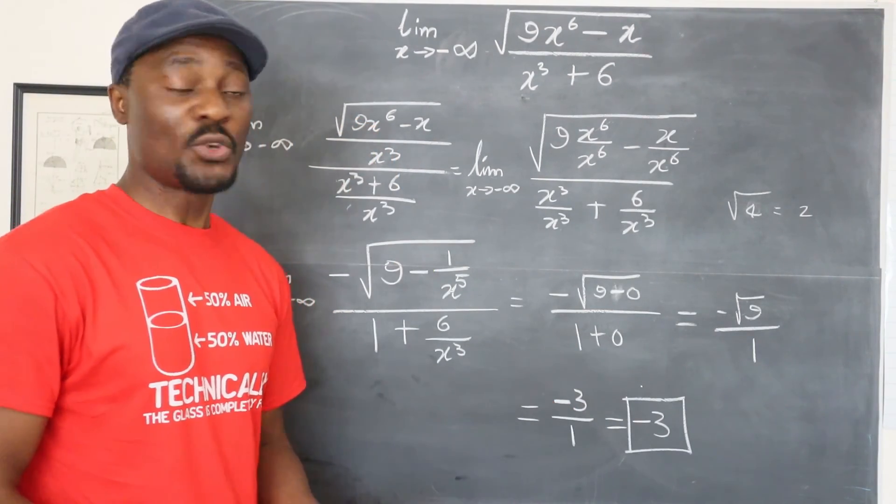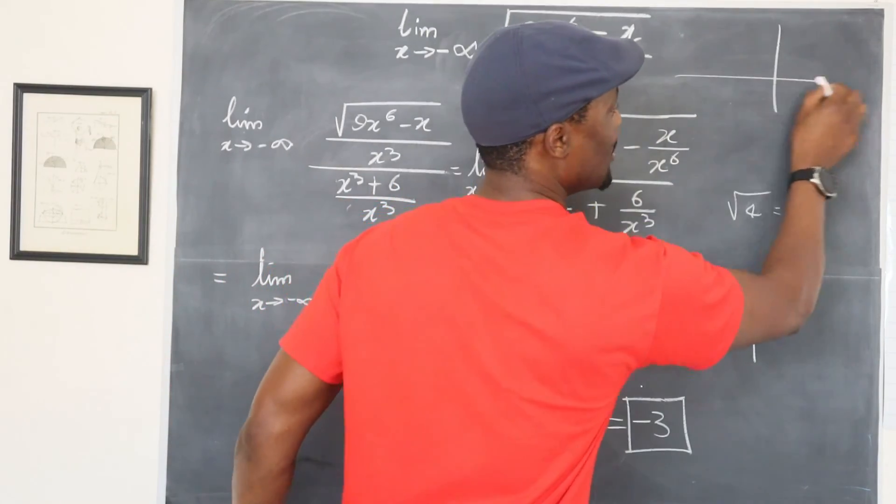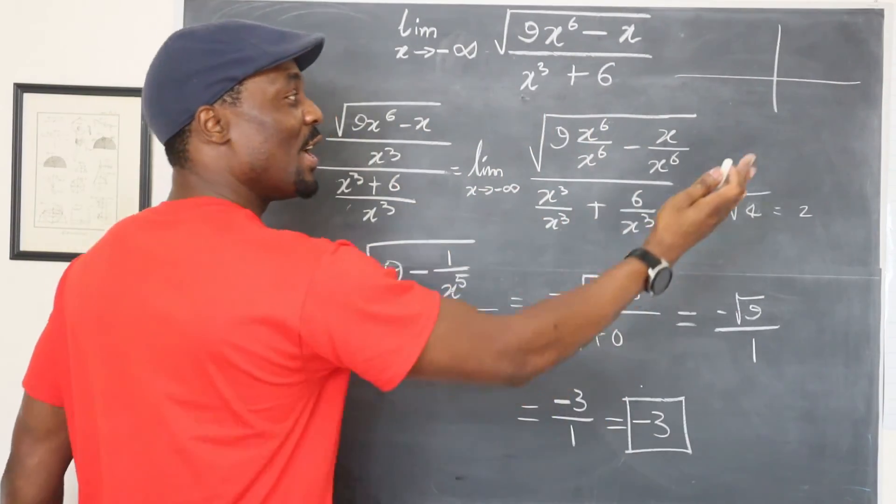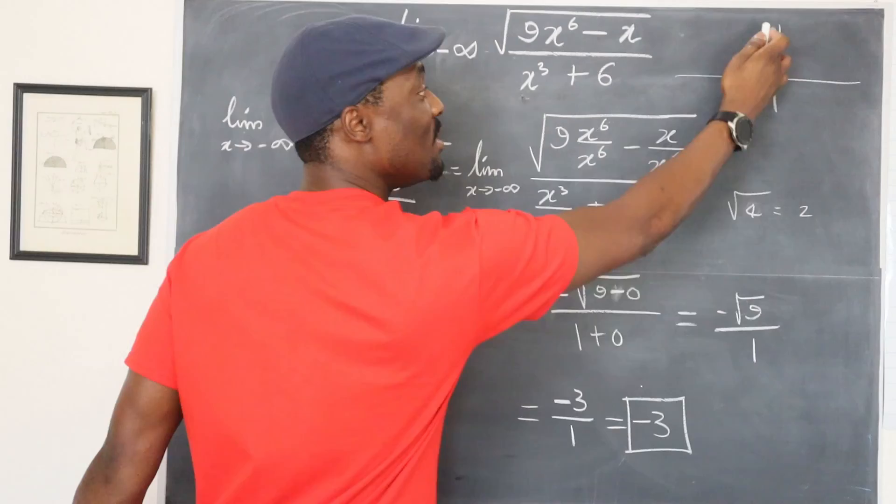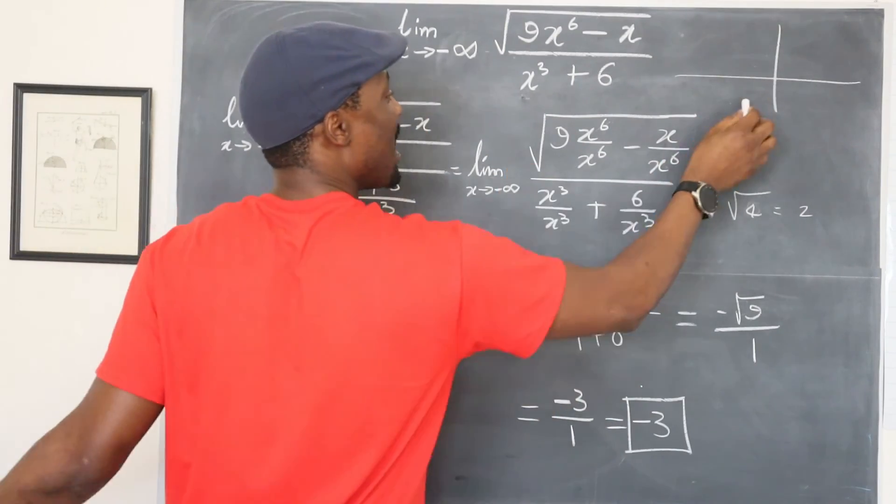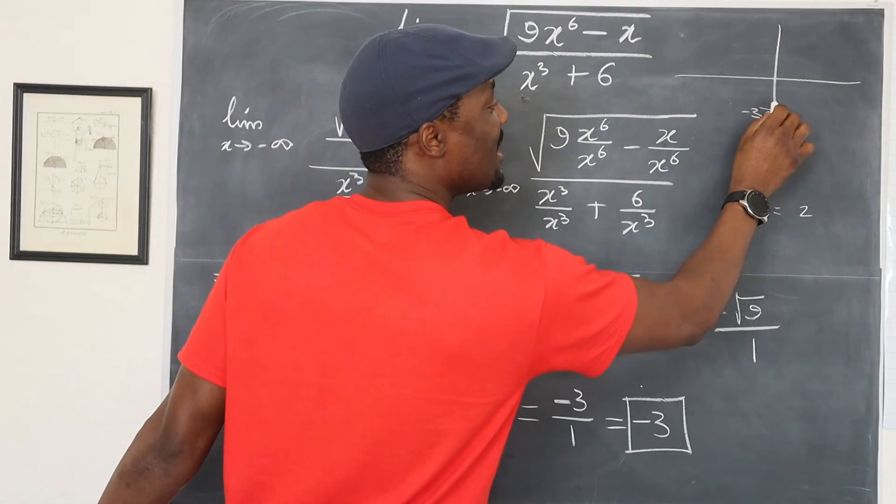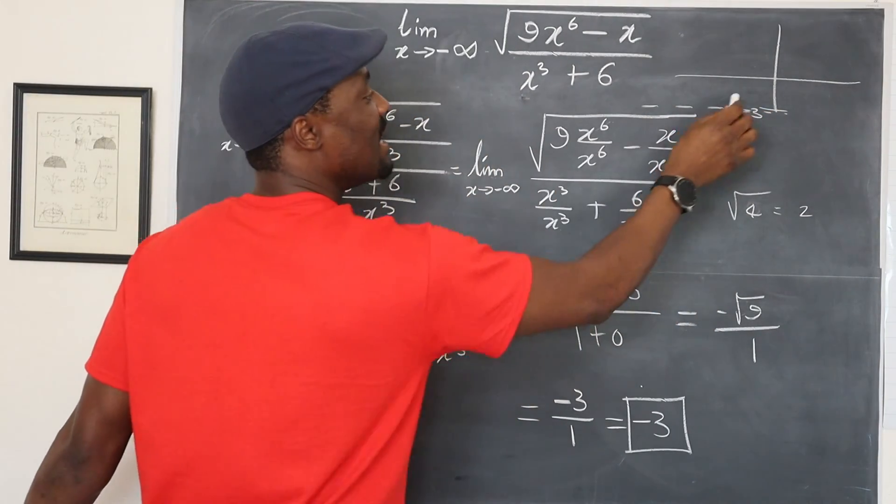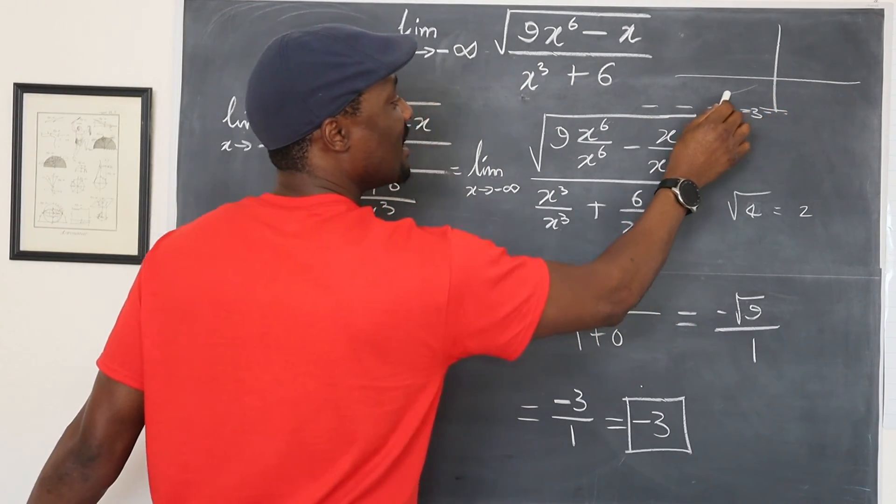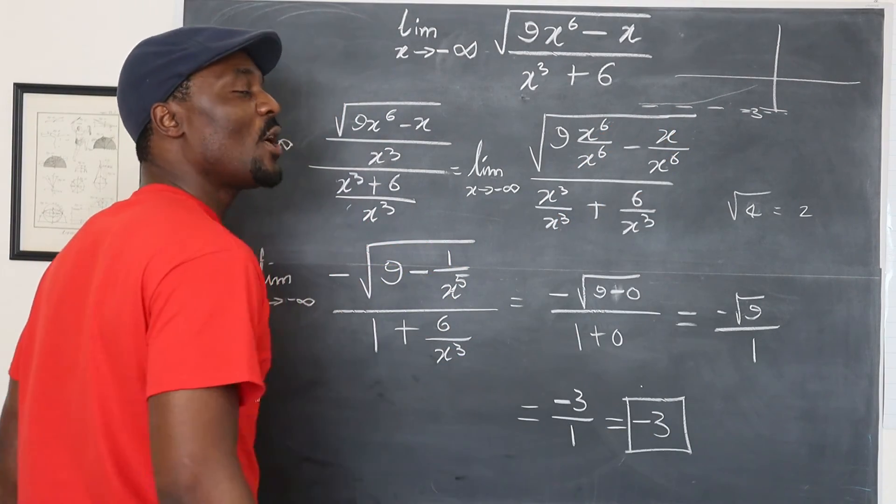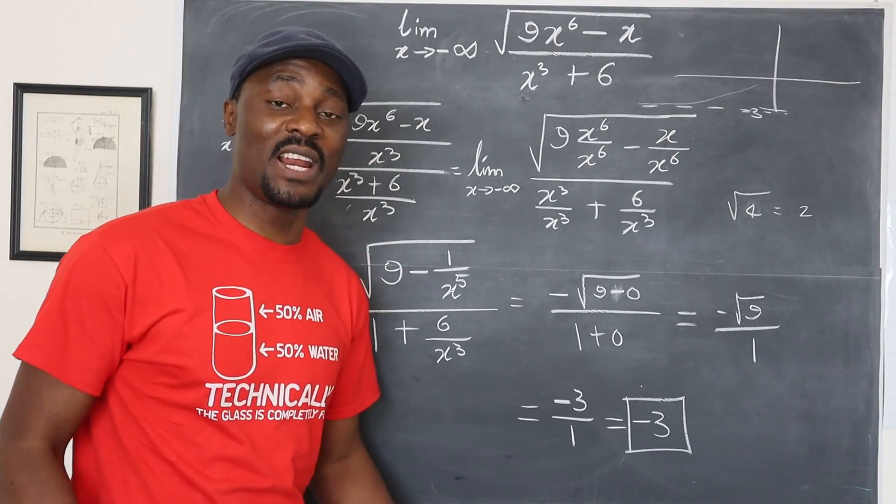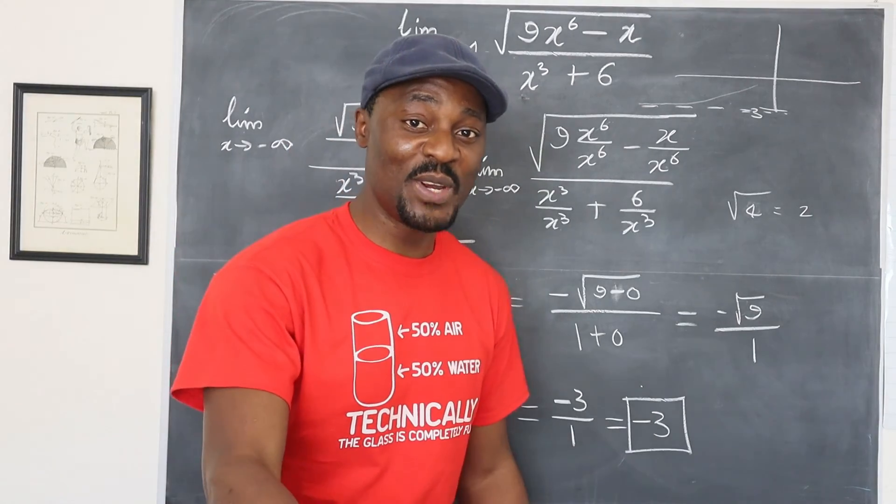So when you plot the graph, what it just tells you is when you plot the graph, the farther where you move from here and you're going this way, you'll find out that the line is getting close to negative three. So let's say this is the negative three limit. This line will be something that goes like this, going closer and closer and closer to negative three, but it will never reach negative three.